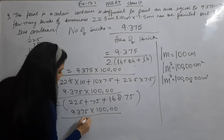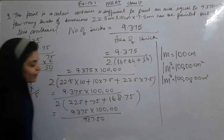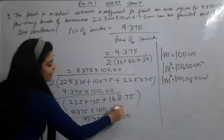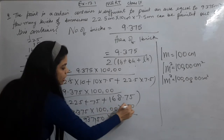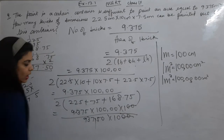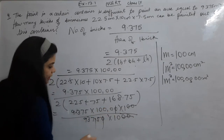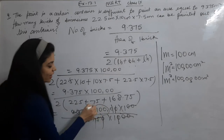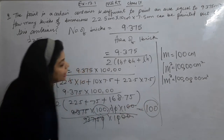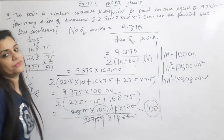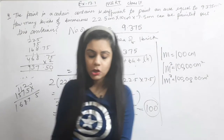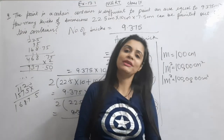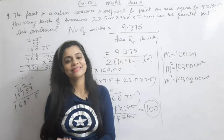After calculation, the total surface area of one brick comes to 937.50 centimeter square, and dividing 93,750 by 937.5 gives us 100 bricks as the answer. So guys, we have done today the 3rd and 4th question. We will do more in our next video. Bye-bye, see you!